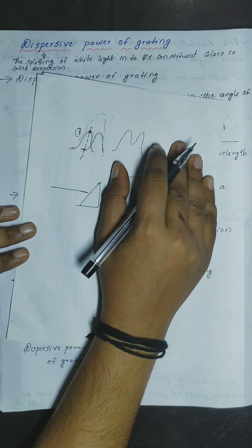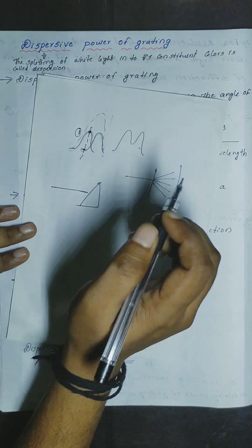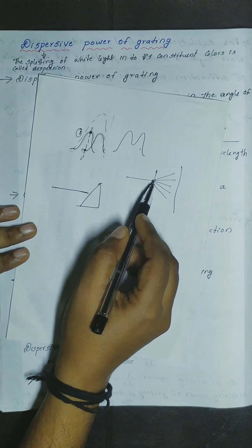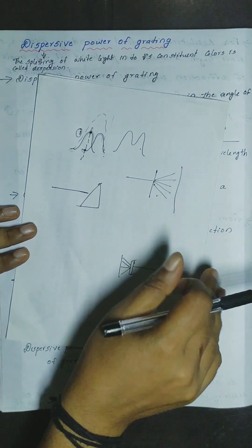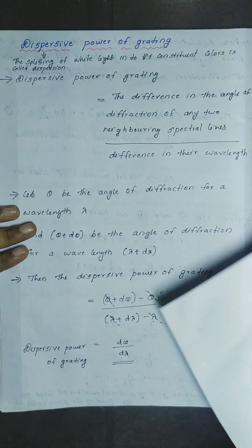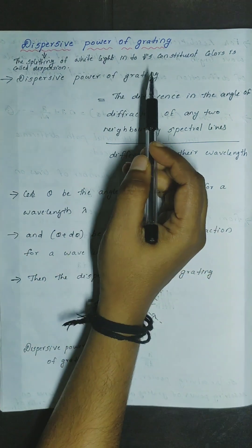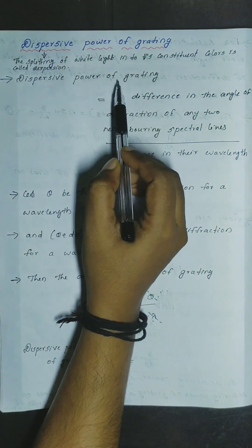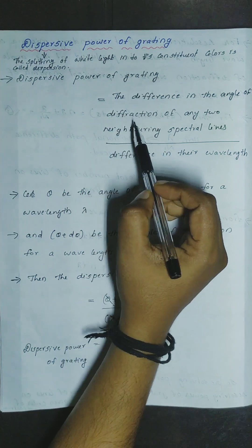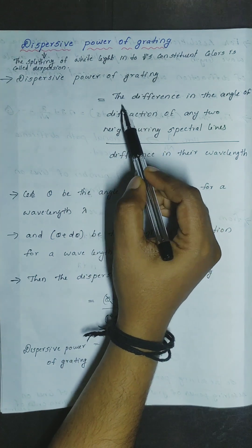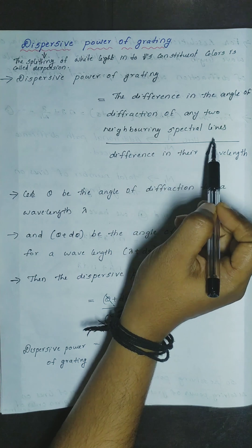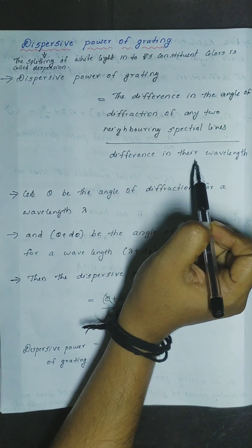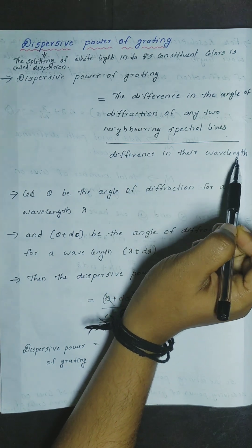Splitting of white light into its constituent colors is known as dispersion. And here, dispersive power is what we are looking for. Dispersive power of a grating is the ratio of the difference in the angle of diffraction of any two neighboring spectral lines to the difference in their wavelength.